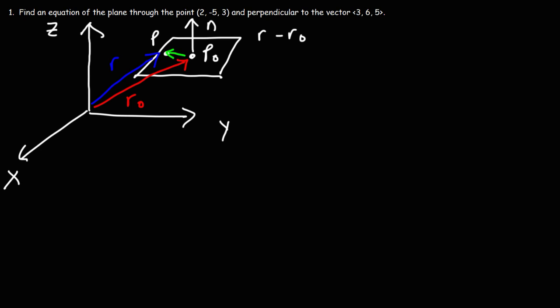R minus R0, that's going to be equal to this vector, which goes from P naught to P. Now keep in mind, N is perpendicular to that vector. Because it's perpendicular to it, the dot product between the normal vector and the vector R minus R0, that's going to equal 0. Because those two vectors are orthogonal to each other.